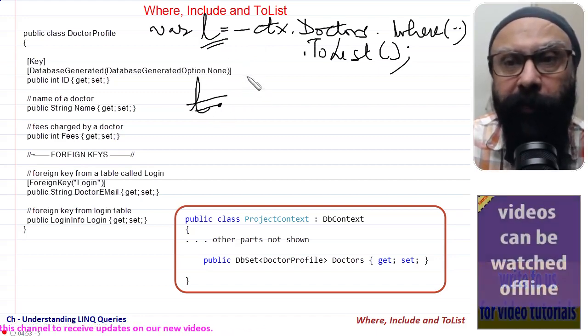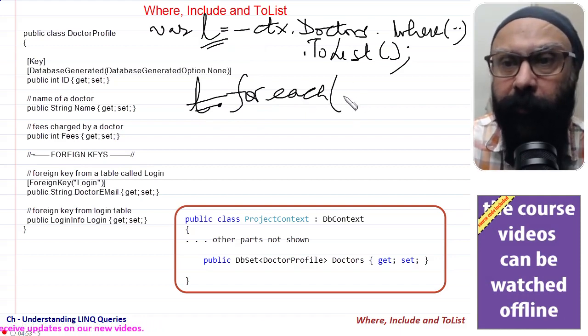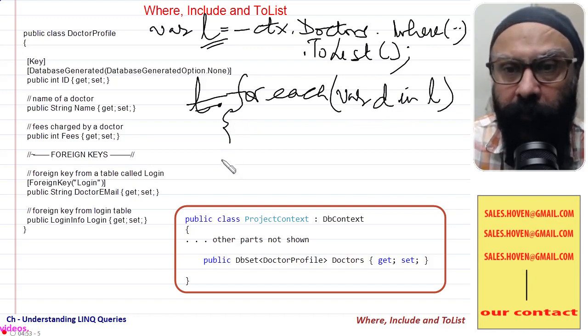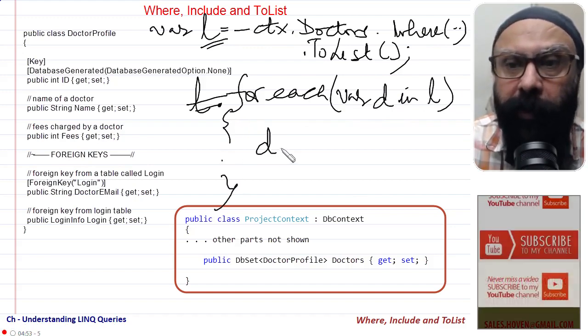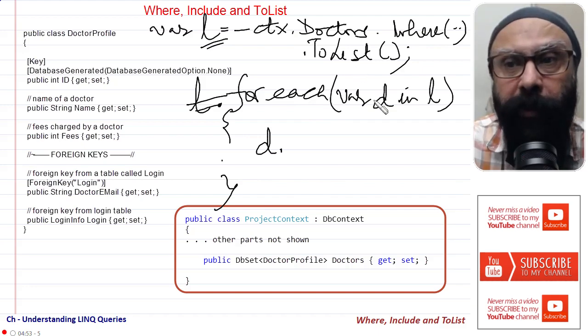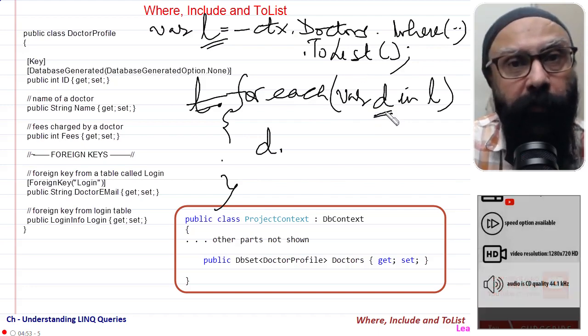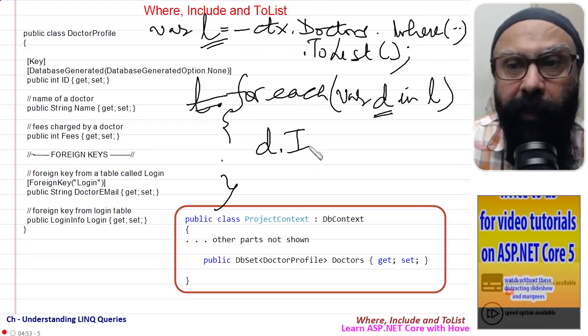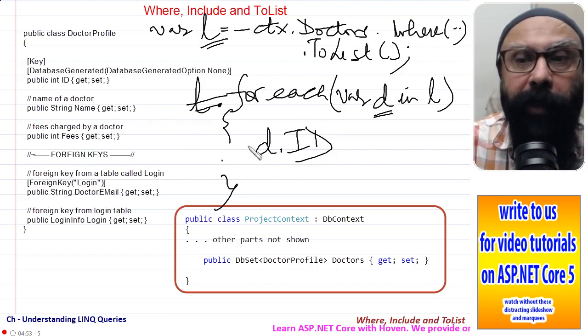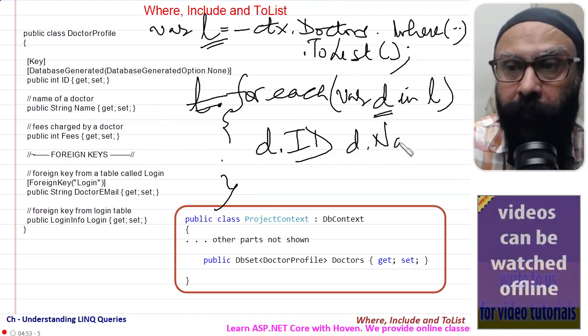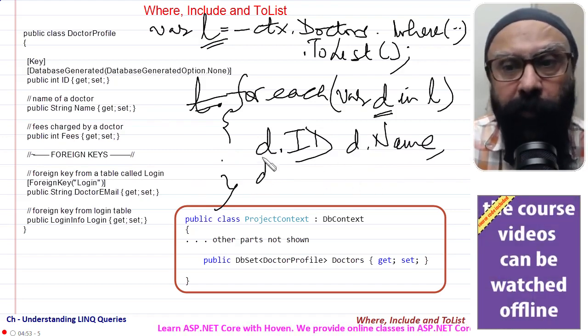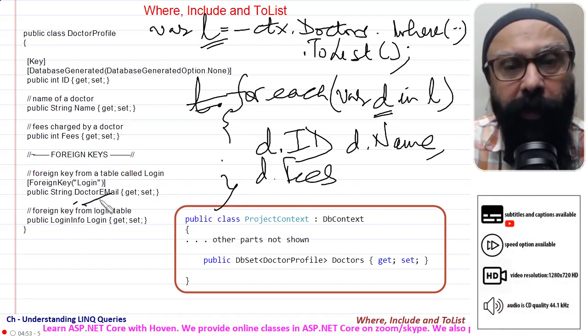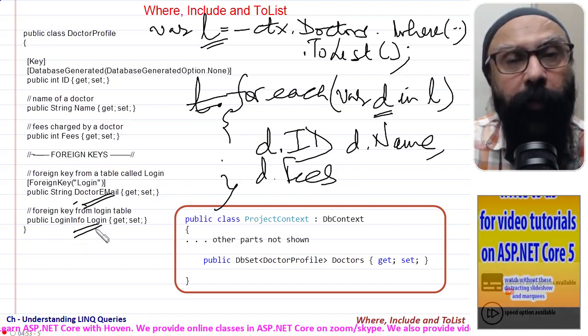So let me say I take out the first object out of the list or I execute a foreach. Let me make it a bit simple: foreach d in l. Now on this d, because I am executing a foreach on the list, in this d this is one DoctorProfile instance. On this d I should get ID, I should be able to read the value of ID. I will get Name also. I will get Fees also.